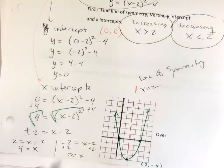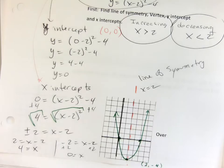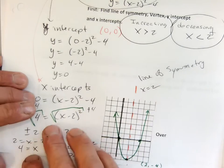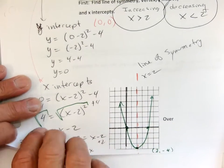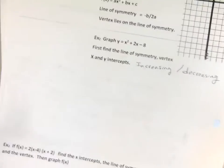Decreasing is going downhill when x is less than 2. And we'll talk more about this as we progress. That wasn't so bad, was it? Now, turn the page.